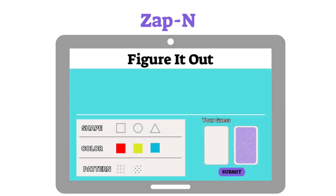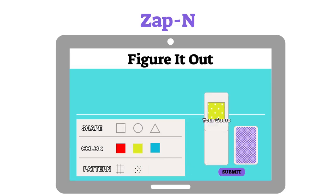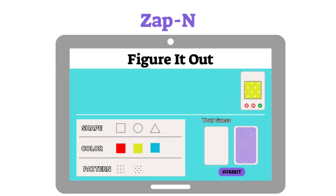After a couple of quick games, we're back to something heavier with Figure It Out. In this game you need to find the properties of a hidden figure, like shape, color, pattern, etc. This is done using the feedback you get about correct and incorrect properties. The lower your number of guesses, the higher your score is going to be.